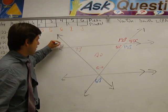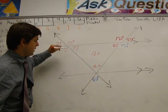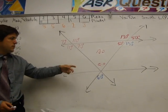If this is 70, then by vertical angles, this is 70. By linear pairs, this is 110. By linear pairs, this is 110. And now we're really close. We've just got to get these ones.